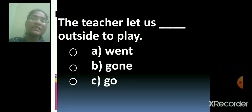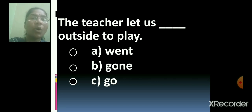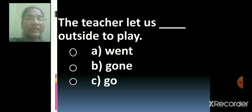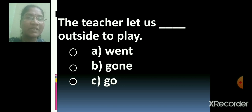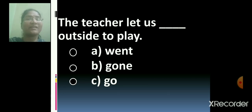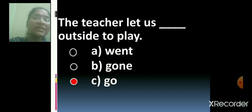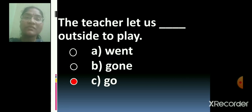The teacher let us dash outside to play. The teacher let us went outside to play, or the teacher let us gone outside to play, or the teacher let us go outside to play? Just think and give me the correct answer. Very good. The teacher let us go outside to play. So 'go' — that means C is the correct option. The teacher let us go outside to play. Now repeat after me.